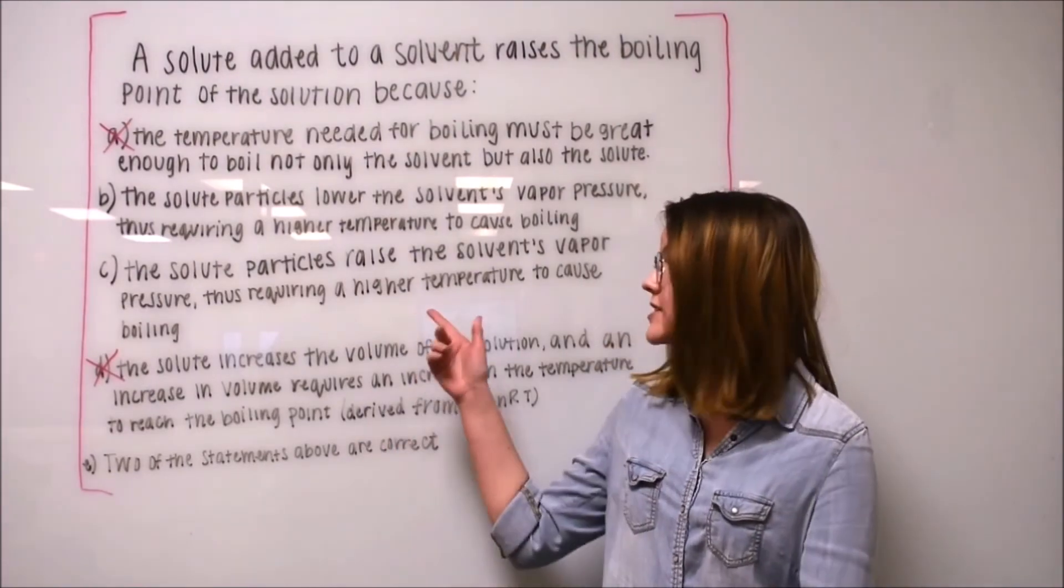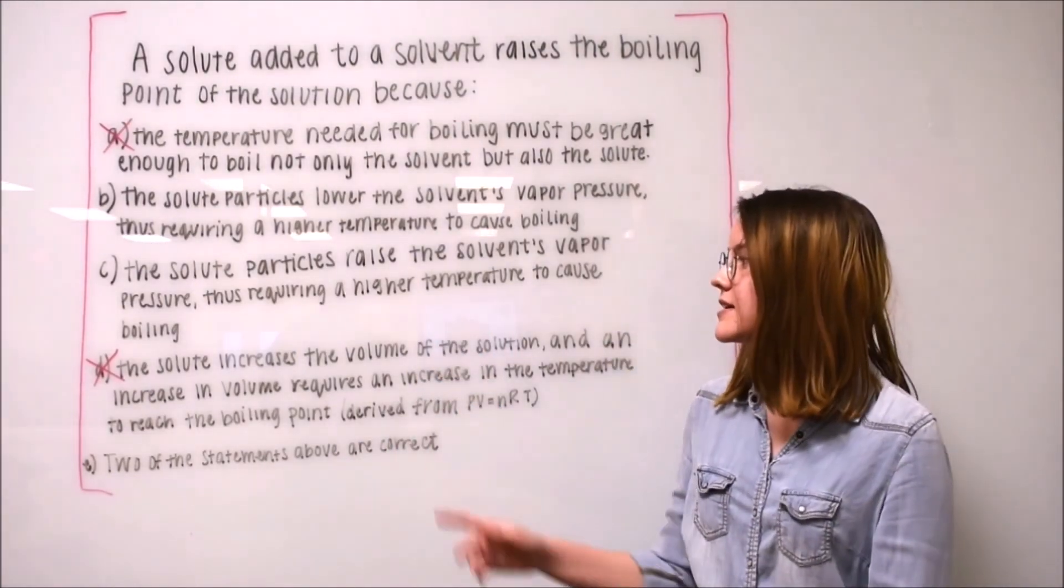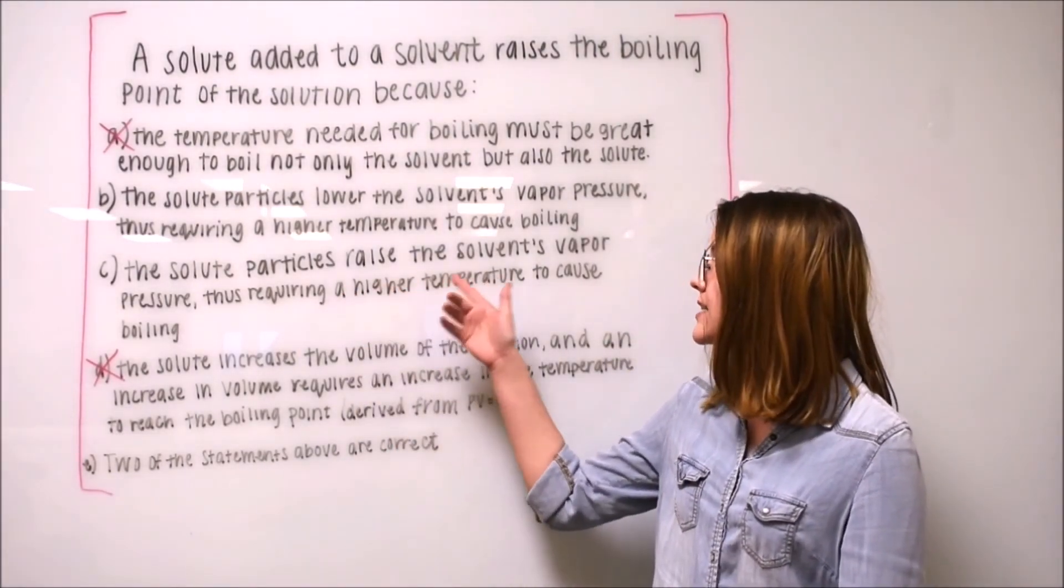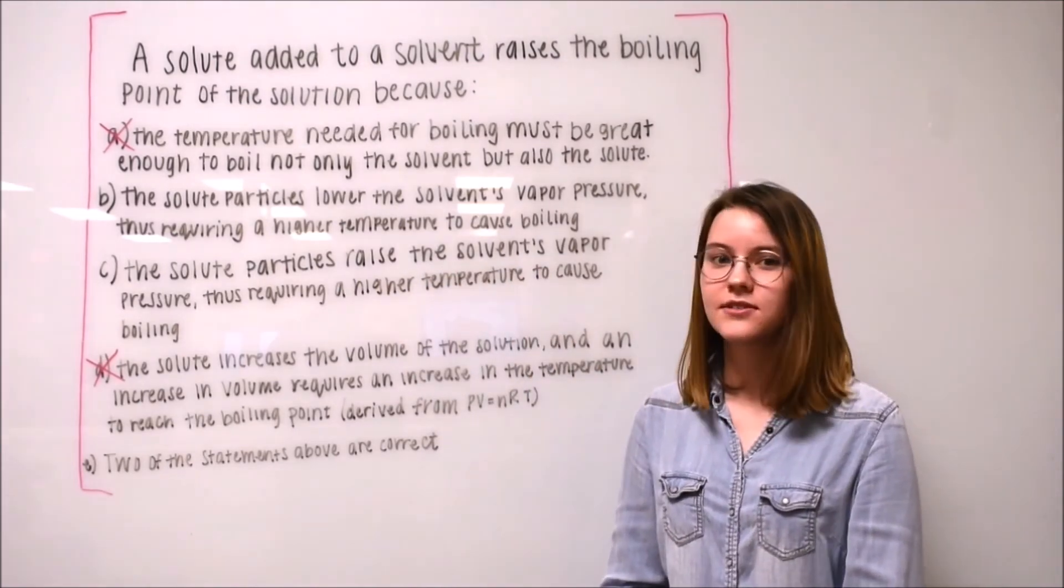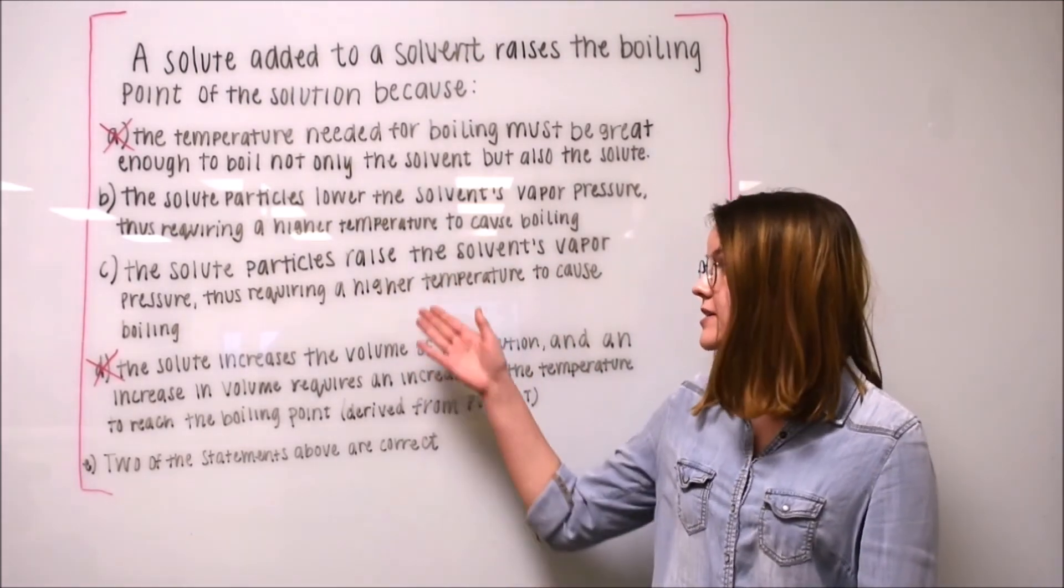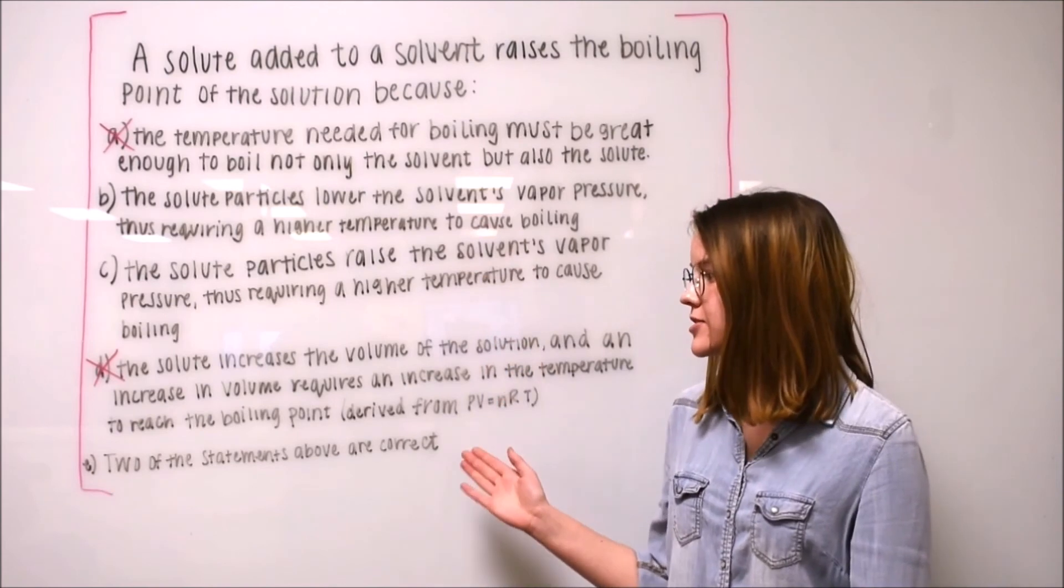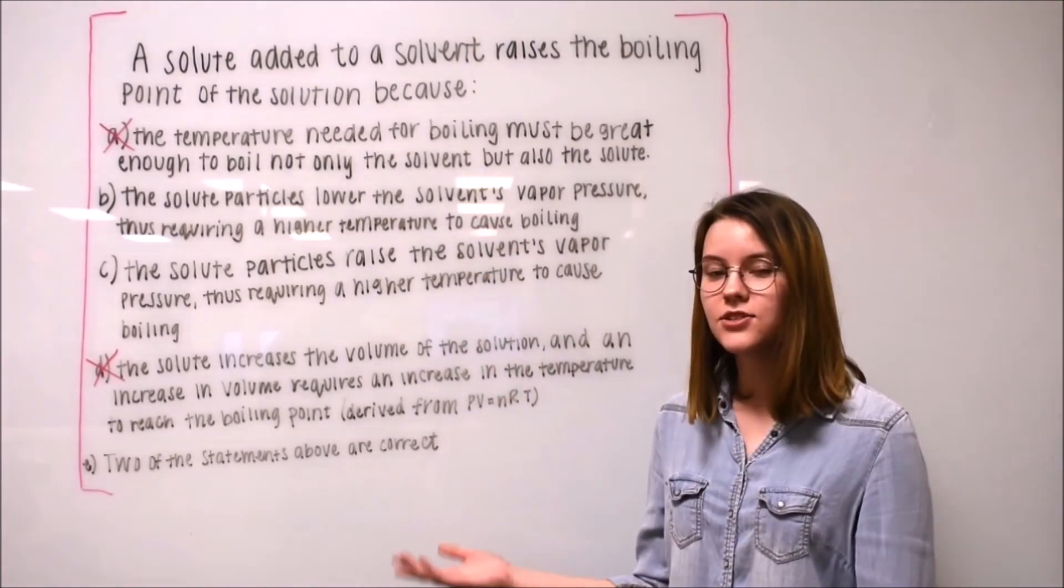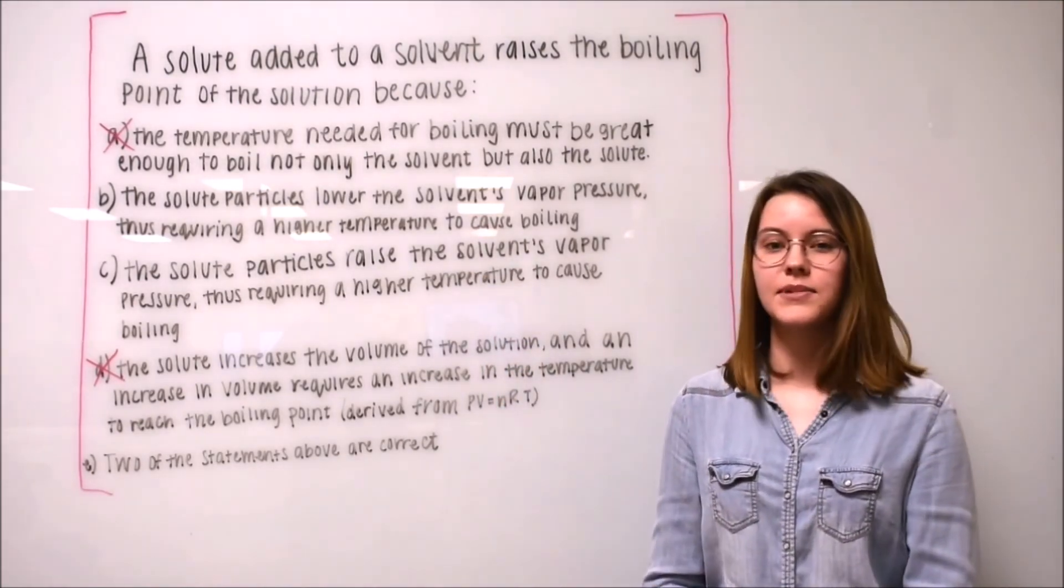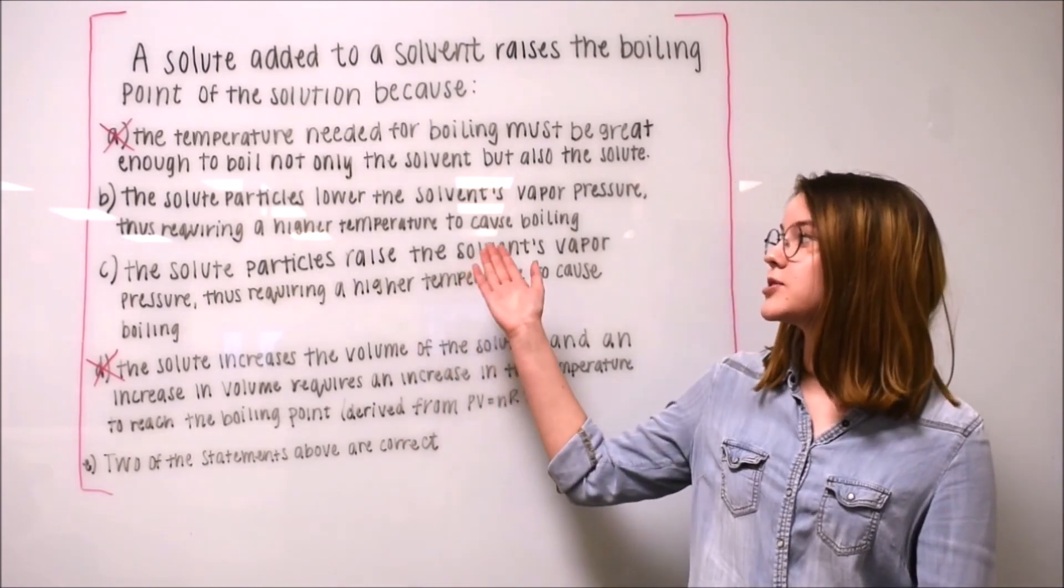From this, we can conclude that option C is wrong because it says the solute particles raise the solvent's vapor pressure. And because we have eliminated three of the options, E, which states two of the options are correct, can be eliminated. And we are left with option B.